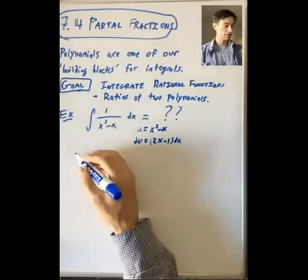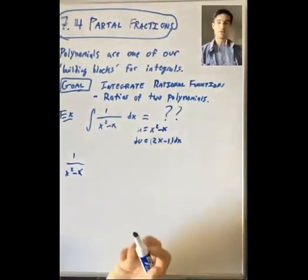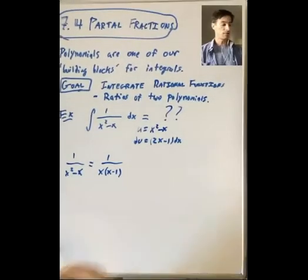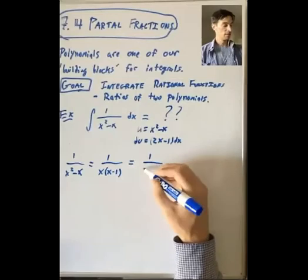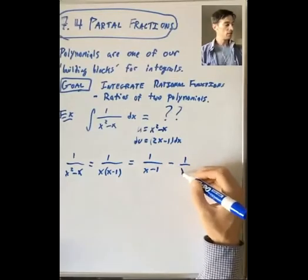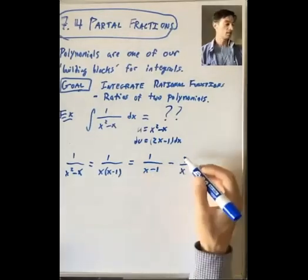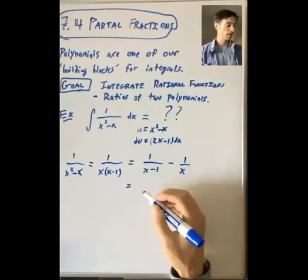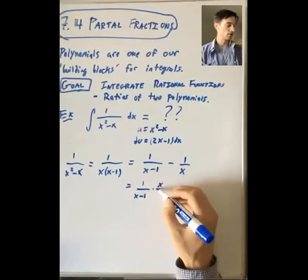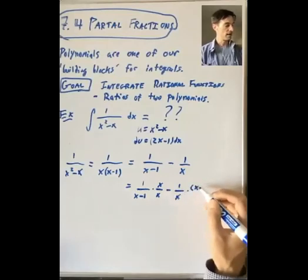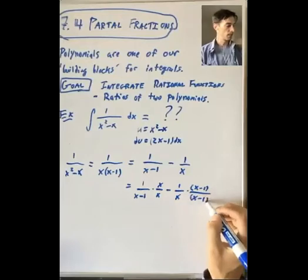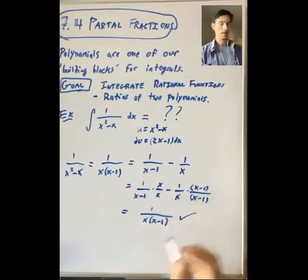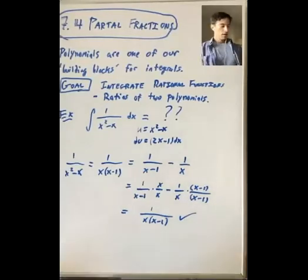In this example, we are saved by the following fact. You can rewrite this rational function: first notice that the denominator factors as x times x minus 1. And in fact, 1 over x squared minus x equals 1 over x minus 1 minus 1 over x. You can check that by putting these over a common denominator — you get 1 over x times x minus 1, which is what we started with.